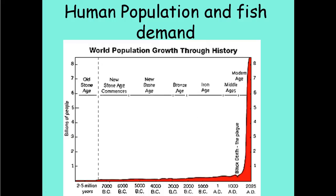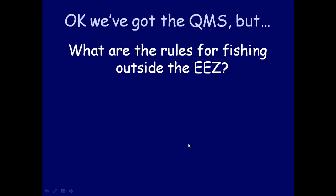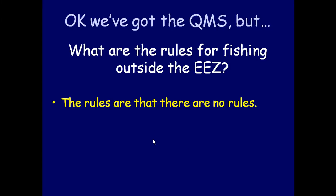Is this going to get any better? Here's the human population growth curve — incredible exponential growth over the last couple of centuries. Can we expect less demand and less fishing pressure on wild-caught fish around the world? Obviously not. We have the Quota Management System here in New Zealand, but outside our Exclusive Economic Zone, there are no rules.